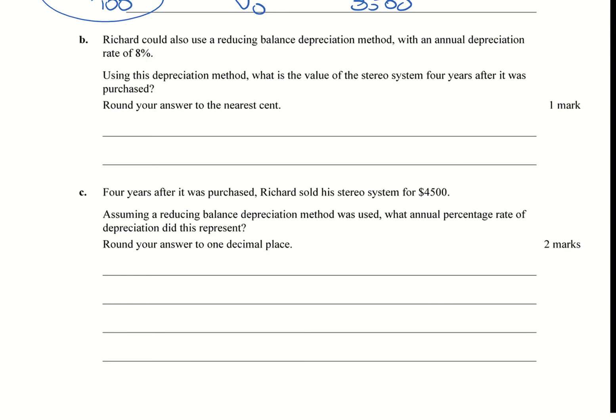Okay, so now we're looking at Question B. It says Richard could also use a reducing balance depreciation model with an annual depreciation rate of eight percent. Using this method, what is the value of the stereo system four years after it was purchased? In this case it's not asking for recursion, so I don't need to show recursion.